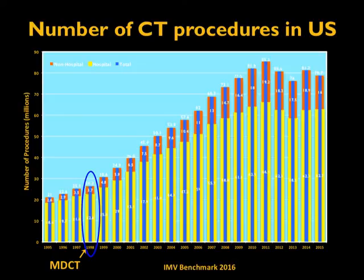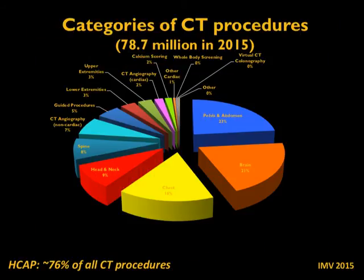To understand CT doses, it is also imperative to understand what type of procedures we normally do in the clinic. This data published in 2015 demonstrates the categories of CT procedures. As you can see, the majority of CT procedures are head, chest, abdomen, and pelvis — in fact, nearly 76% of all procedures done in the US are in those categories. There are other procedures beginning to appear in national data, such as CT angiography, cardiac CT, and calcium scoring.